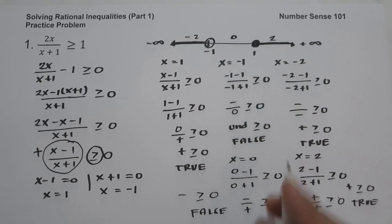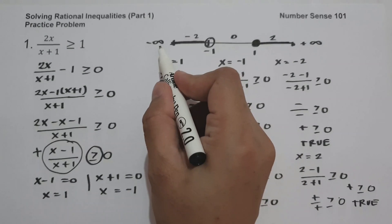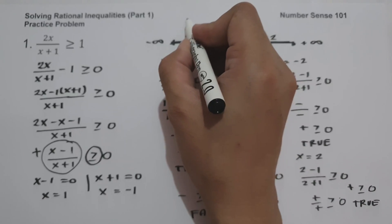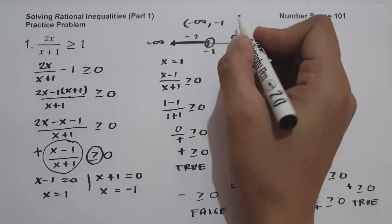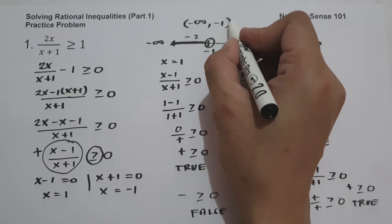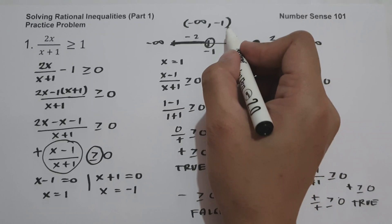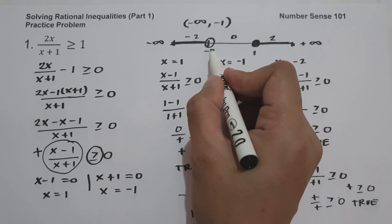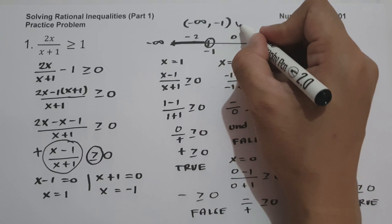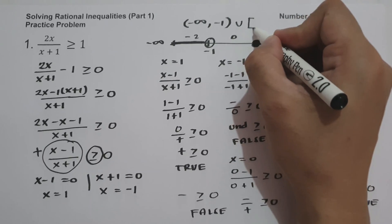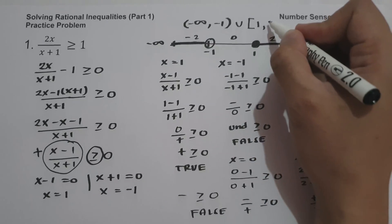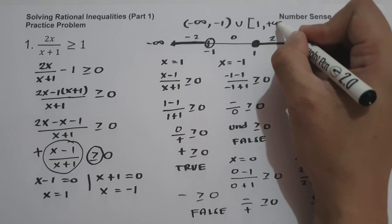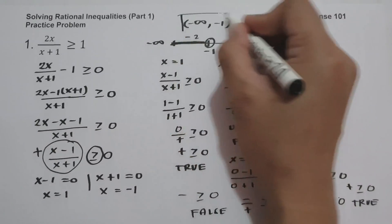Now, how do we write our answer in interval notation? We start with negative infinity to negative 1 using parentheses, because negative 1 is not included in our solution. Union. Then from 1 to positive infinity using a bracket, because 1 is included in our solution. So the answer is (-∞, -1) ∪ [1, +∞).